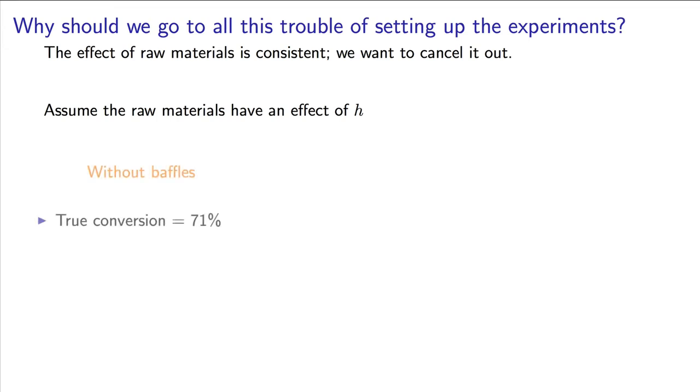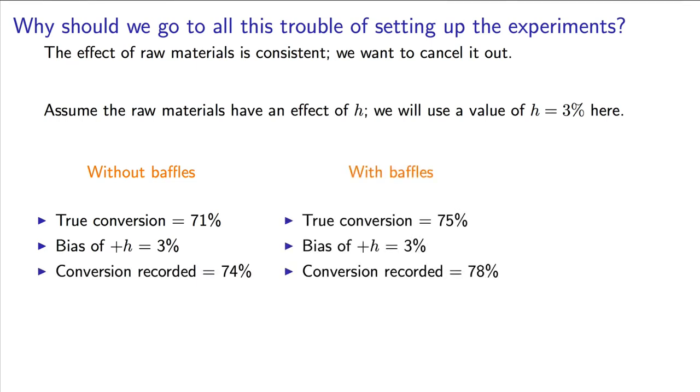Let's look at this mathematically. Let's say the conversion from the first reactor test was 71%, but the raw material has an effect of three units, so we measure a conversion of 74%. In the reactor with baffles, the conversion was 75%, but the raw material's effect of three units means that we observe a value of 78. When we subtract the numbers, 78 minus 74, we get a difference of four units.